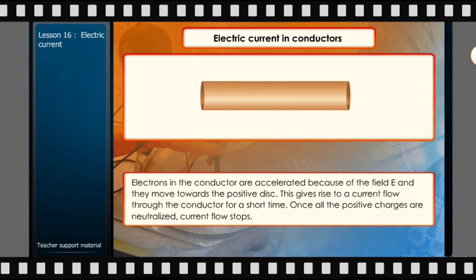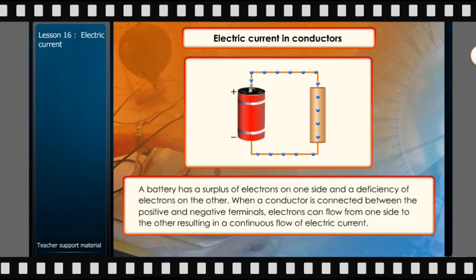A battery has a surplus of electrons on one side and a deficiency of electrons on the other. When a conductor is connected between the positive and negative terminals, electrons can flow from one side to the other resulting in a continuous flow of electric current.